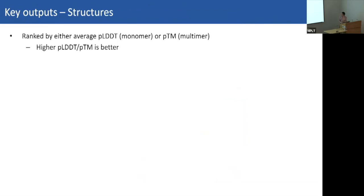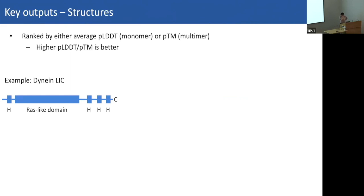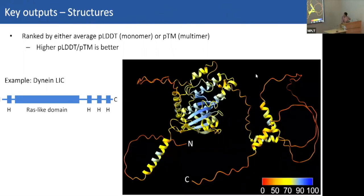AlphaFold gives five structures ranked by PLDDT for monomers or PTM for multimers. Here's an example: dynein's light intermediate chain, which consists of a globular RAS-like domain and four alpha helices. When predicted by AlphaFold, the globular domain comes out clearly, with an N-terminal helix and three C-terminal helices. There's a lot of disordered loop regions shown as spaghetti, but we'll come to that.